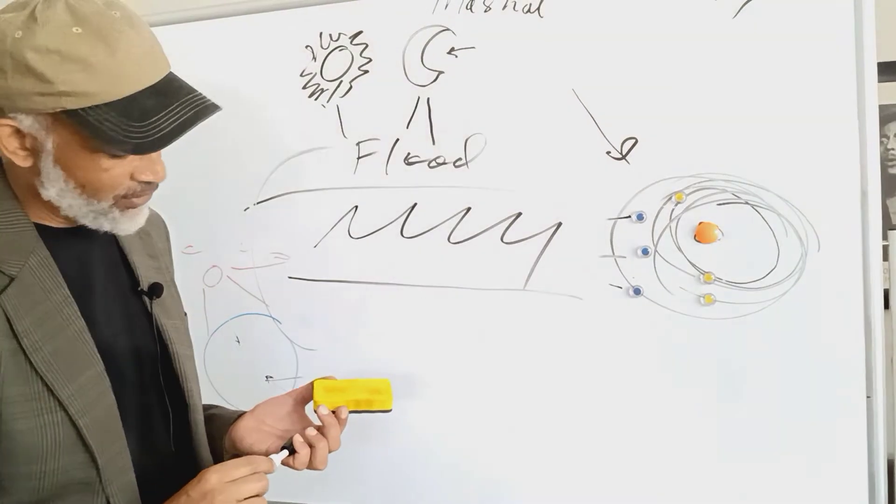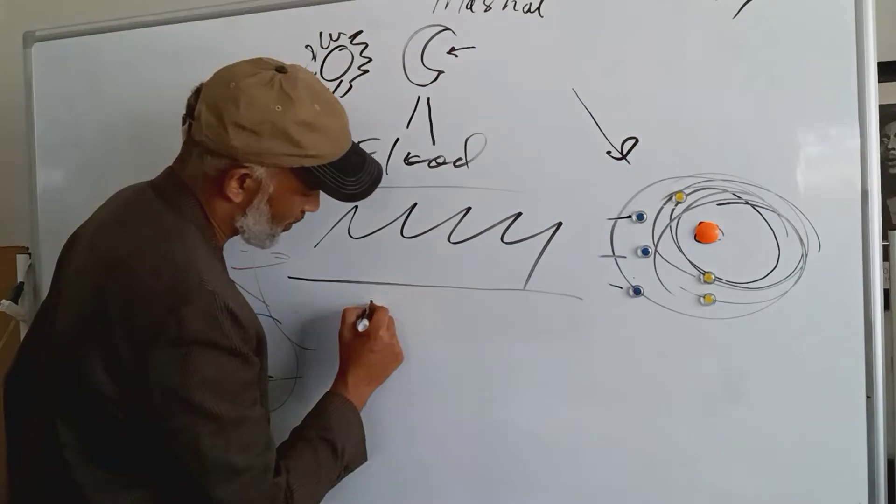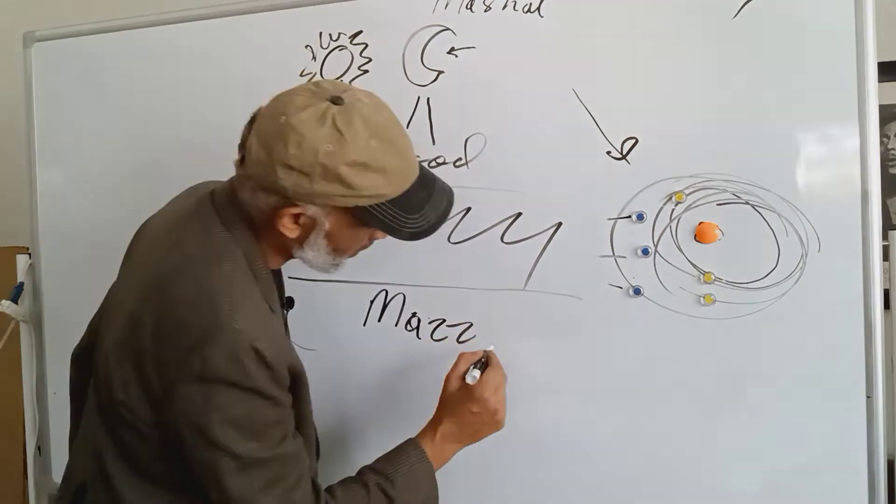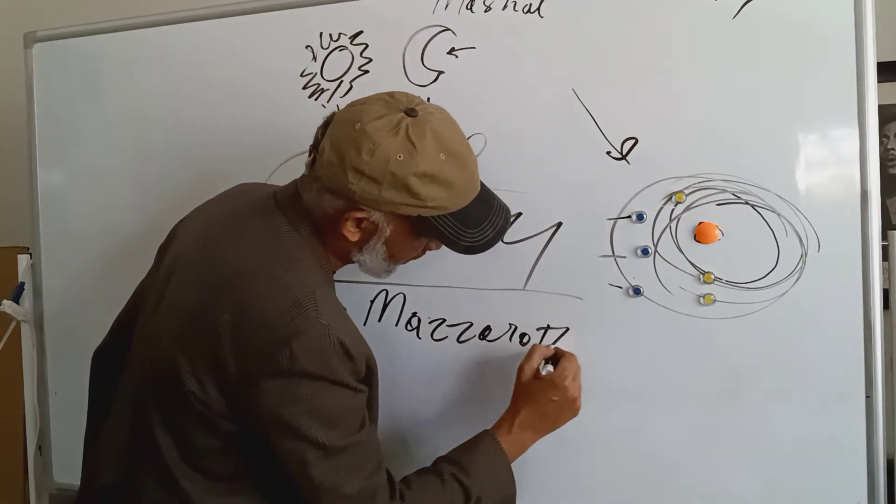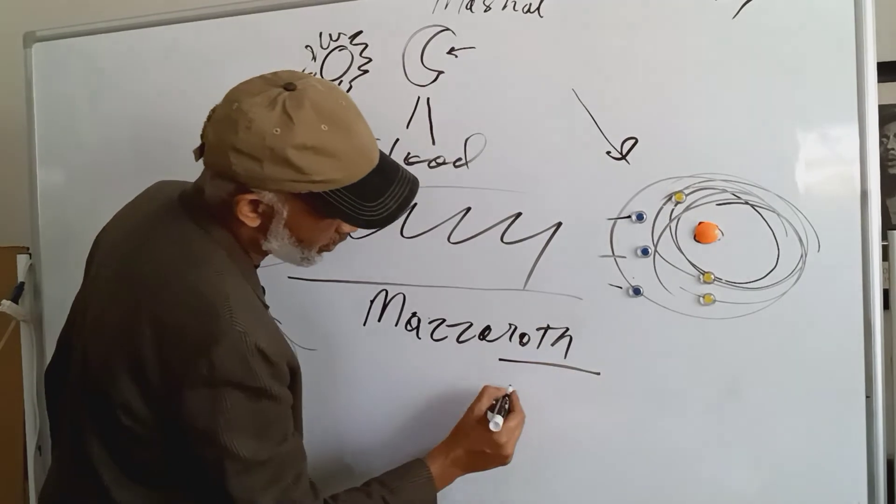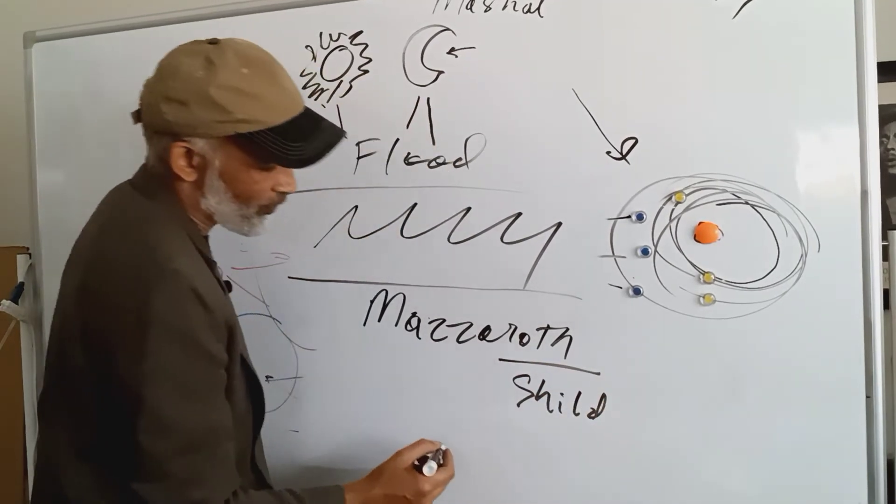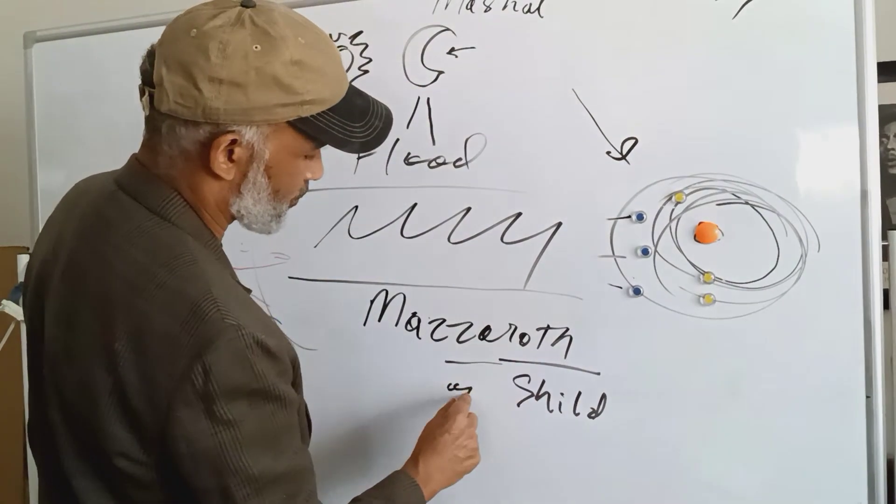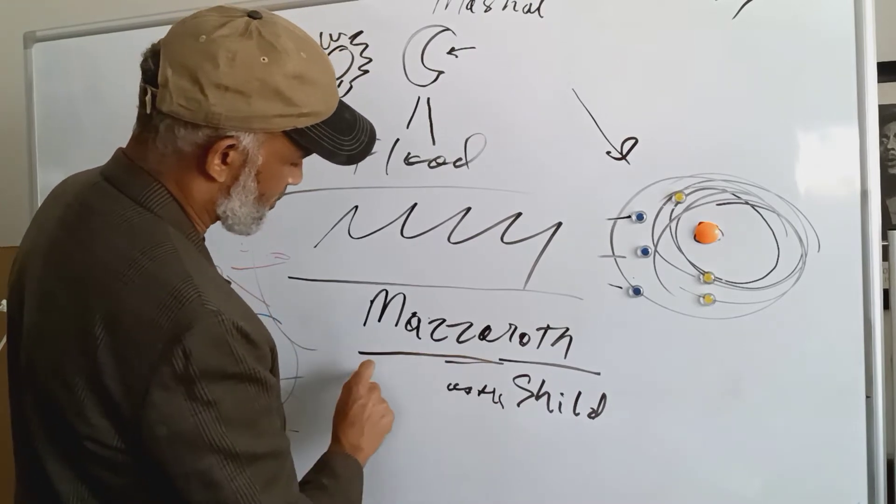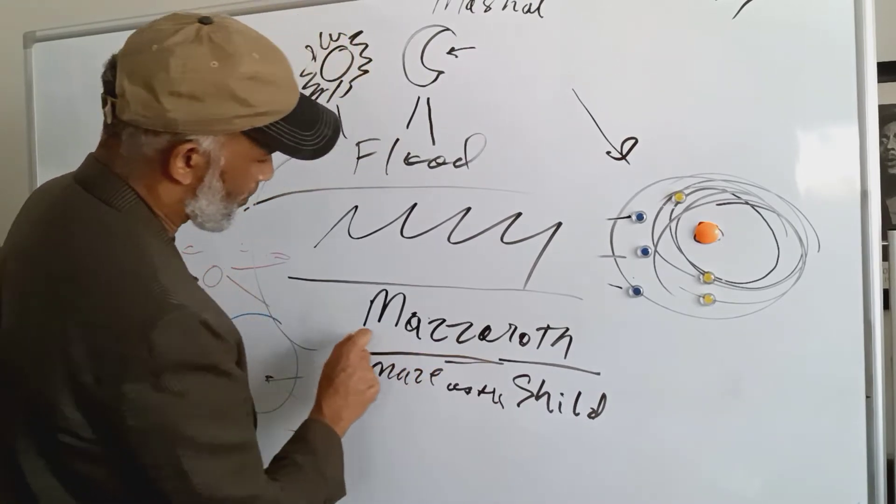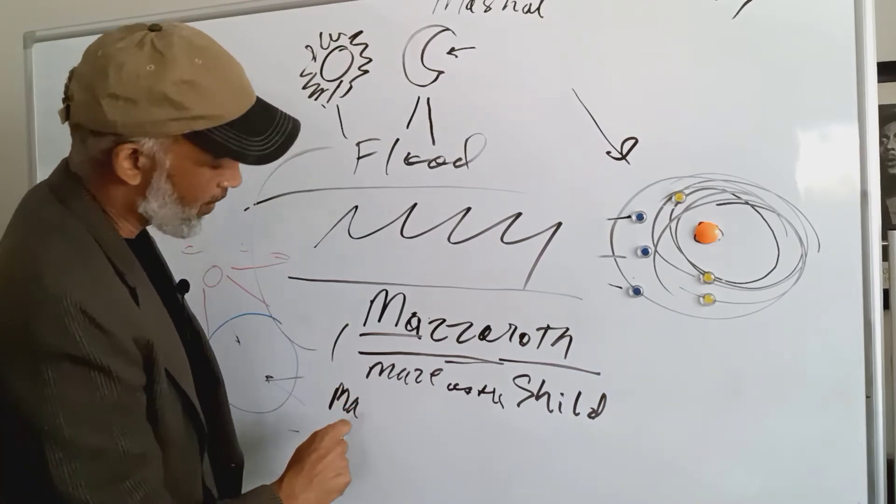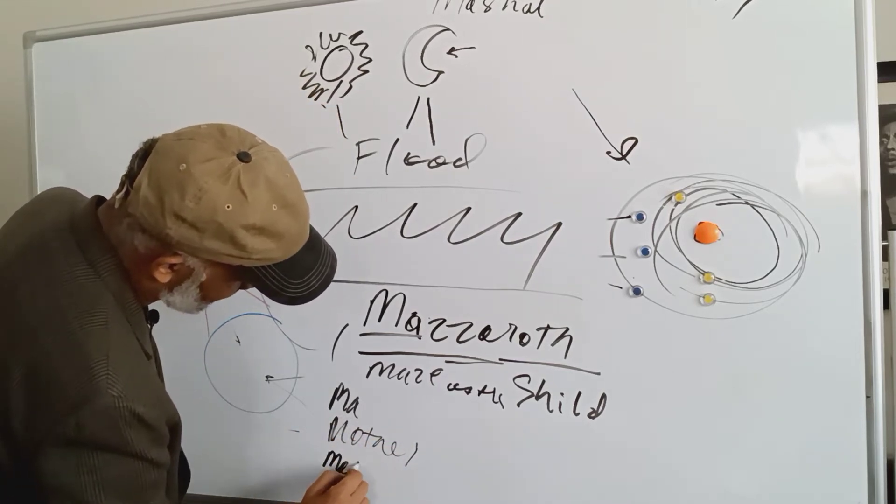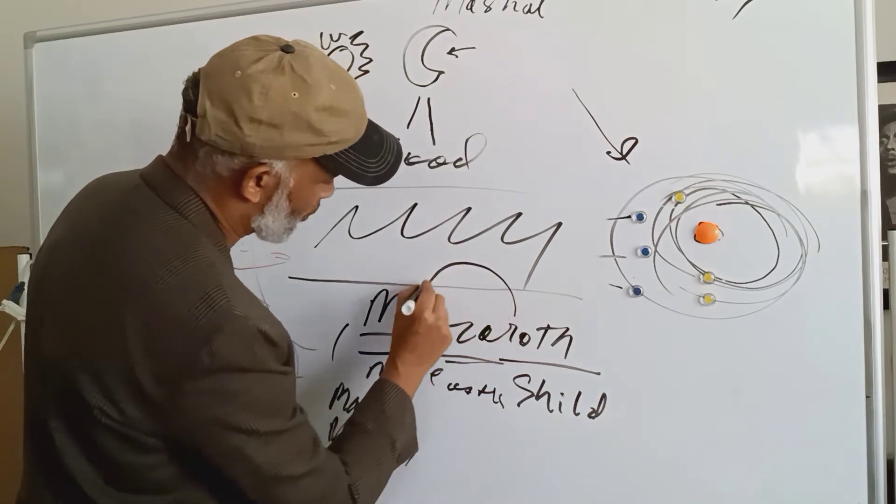So the Mazzaroth, M-A-Z-Z-A-R-O-T-H, Mazaroth, Rothman's Shield, and M-A is Mother.